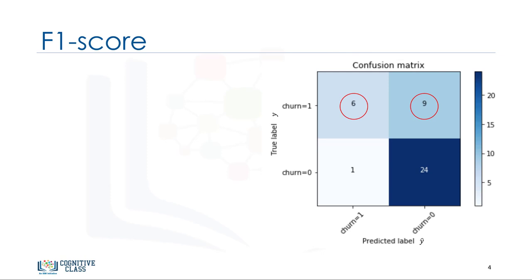What about the customers with a churn value 0? Let's look at the second row. It looks like there were 25 customers whose churn value is 0. The classifier correctly predicted 24 of them as 0, and one of them wrongly predicted as 1. So, it has done a good job in predicting the customers with a churn value of 0. A good thing about the confusion matrix is that it shows the model's ability to correctly predict or separate the classes.